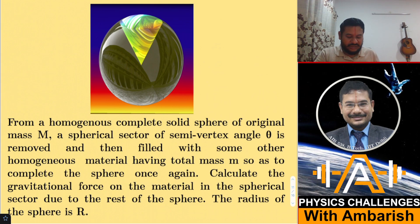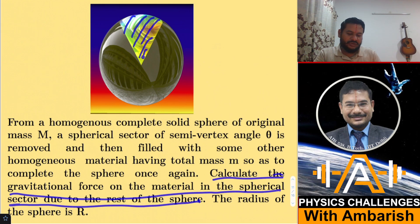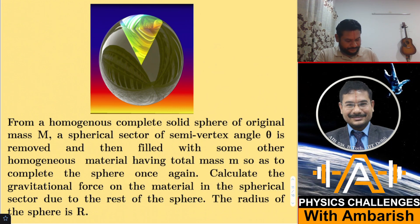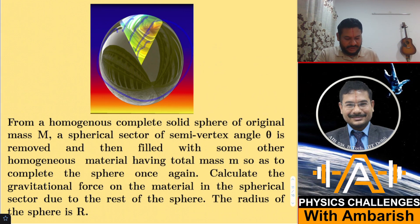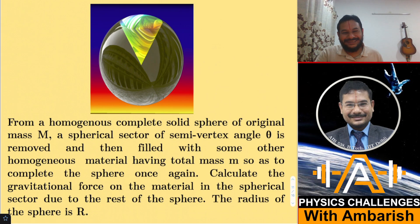Now whole thing is again a sphere. Calculate the gravitational force on the material in the spherical sector due to the rest of the sphere. So we have to find the force on the plastic portion due to the glass portion. The radius of the sphere is given as R. If you want, you can give it a try and I'll present my analysis right away.